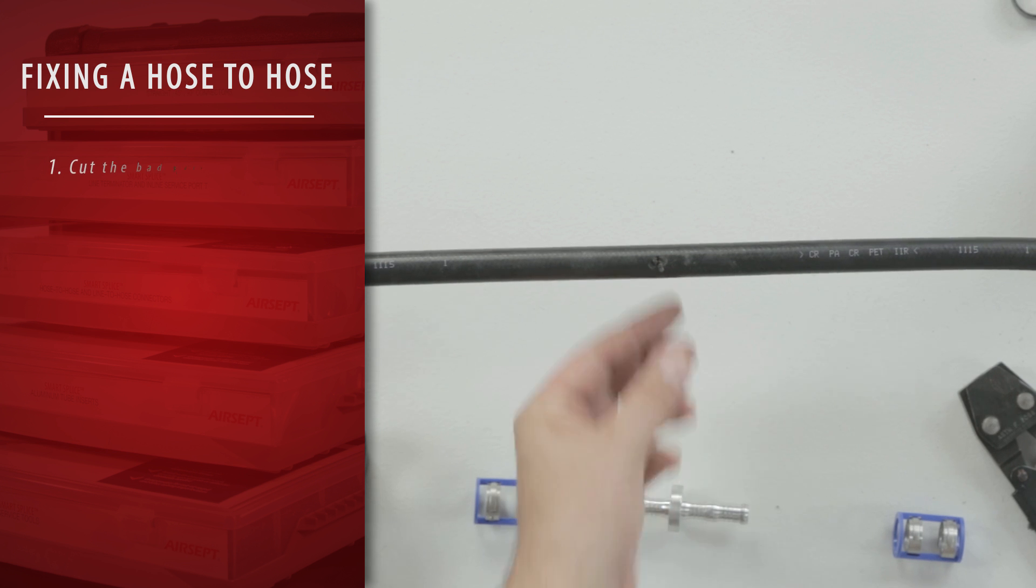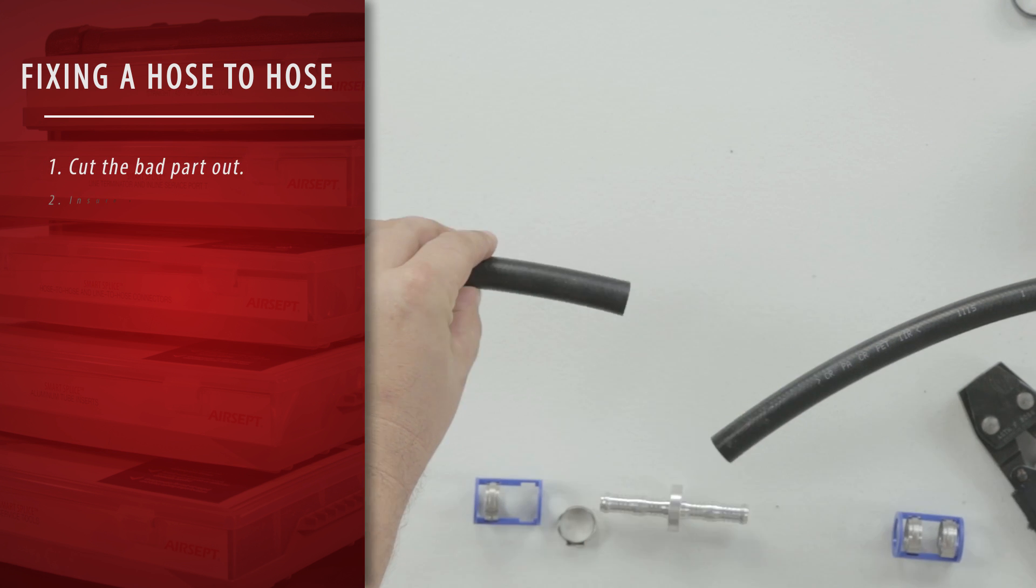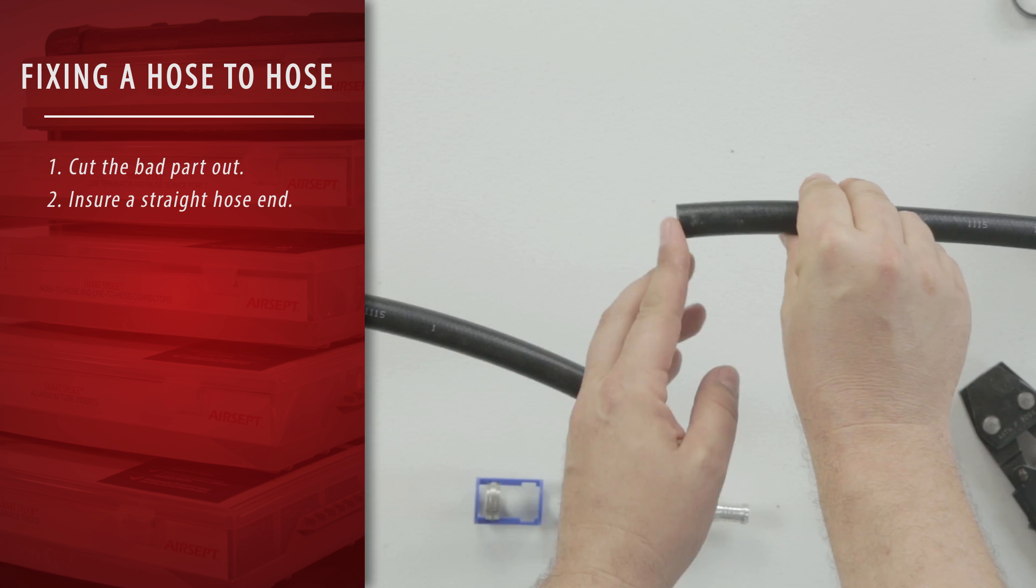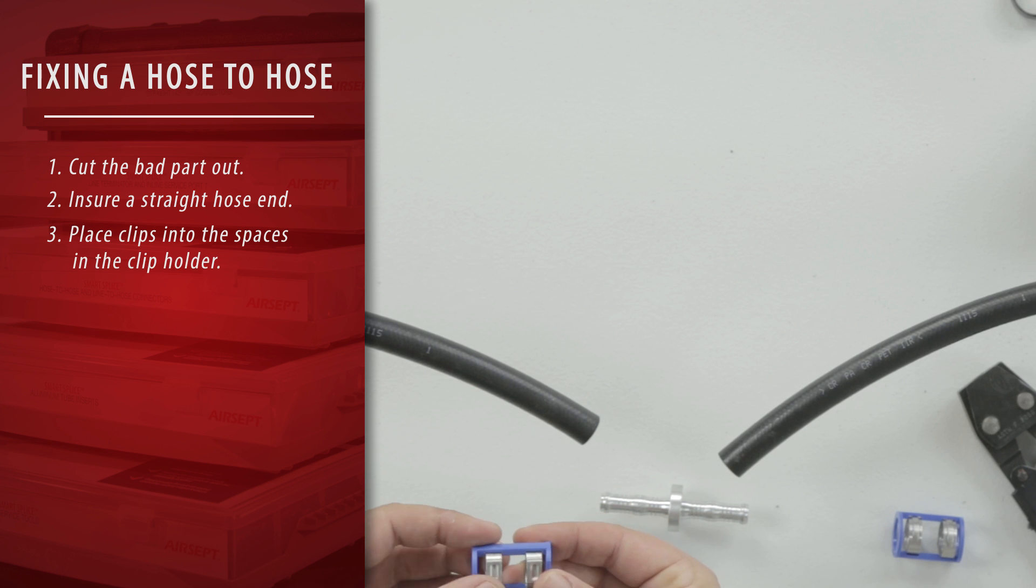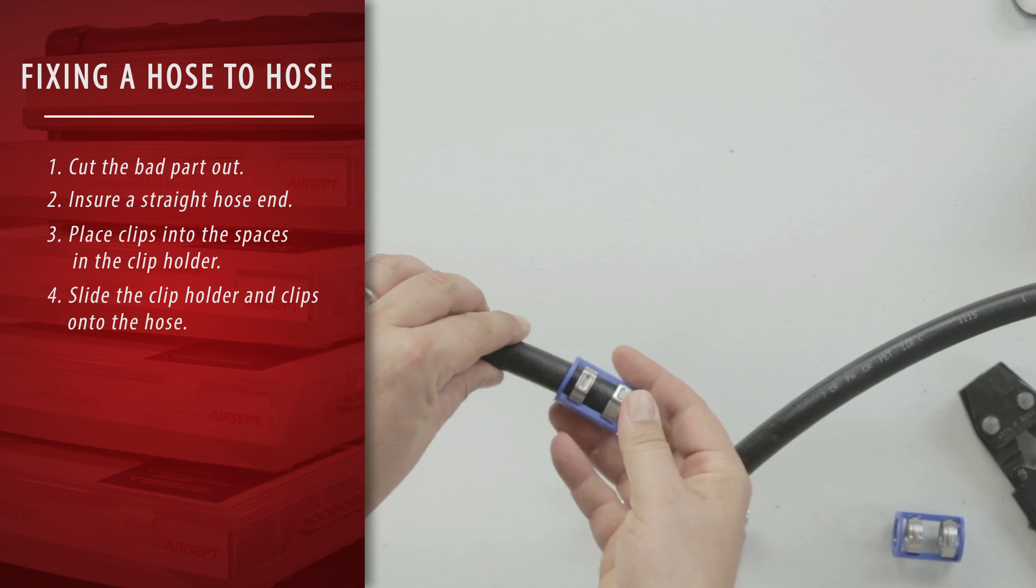For hoses, simply cut the bad part out. Ensure a straight hose end. Place clips into the spaces in the clip holder. Slide the clip holder and clips onto the hose.